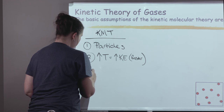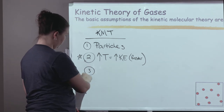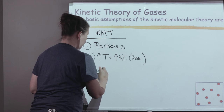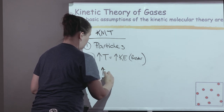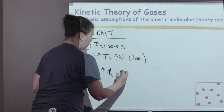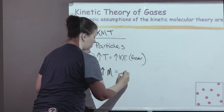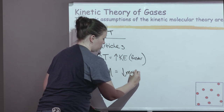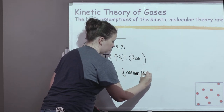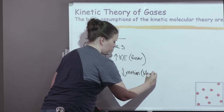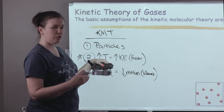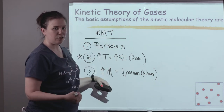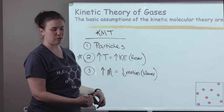Our third postulate is actually going to come back up a lot in this unit. If I increase the mass of a substance, that's actually going to decrease its motion, making it slower. So we saw that increased temperature would increase the motion, whereas an increased mass would decrease the motion.